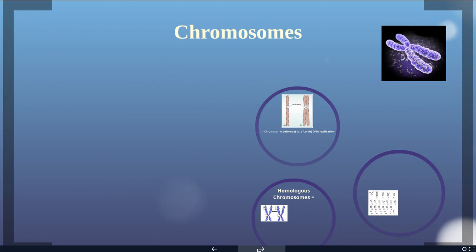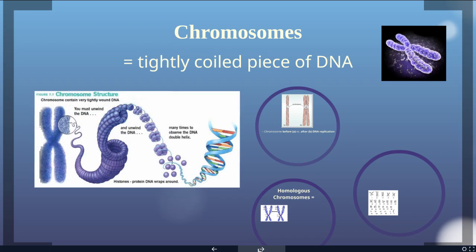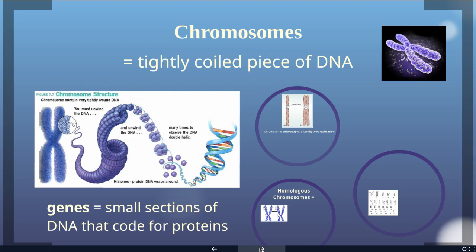A chromosome is a tightly coiled piece of DNA. This graphic shows the relationship of the double helix all the way to the chromosome — the DNA is tightly coiled and highly organized, wrapped around histones. A gene is a small section of DNA that codes for a protein. Three bases code for a particular amino acid, telling you how to build the proteins needed for life. An individual chromosome has thousands of individual genes along it.